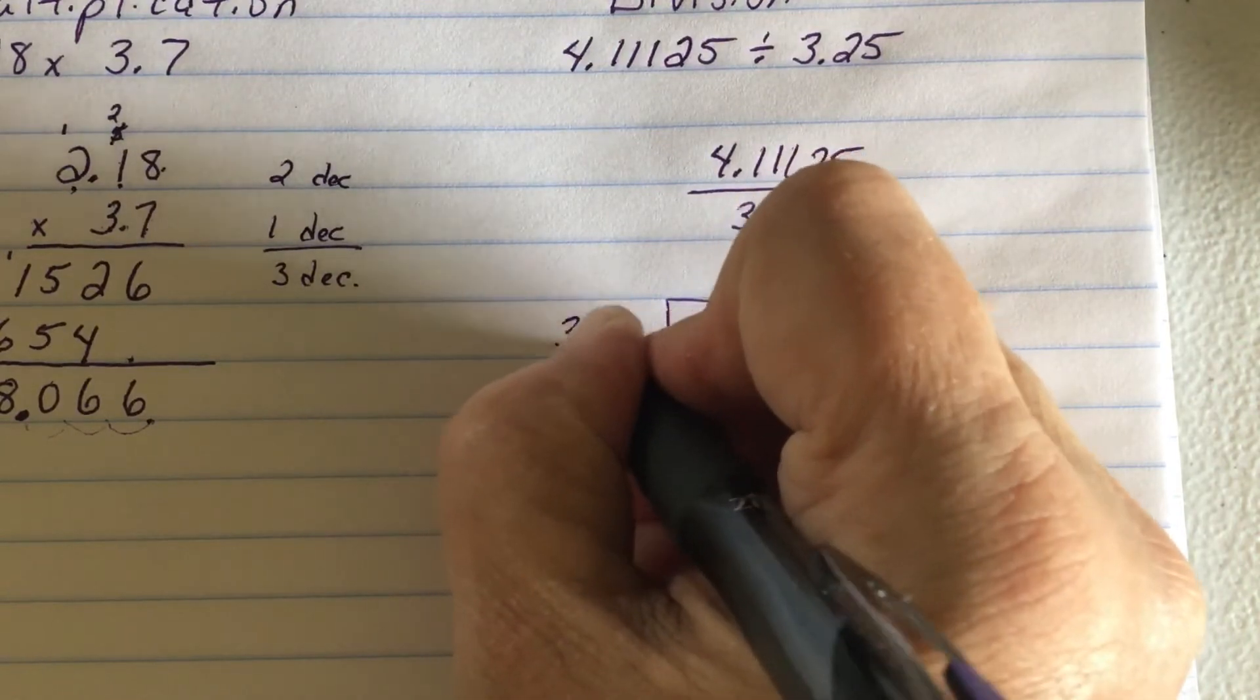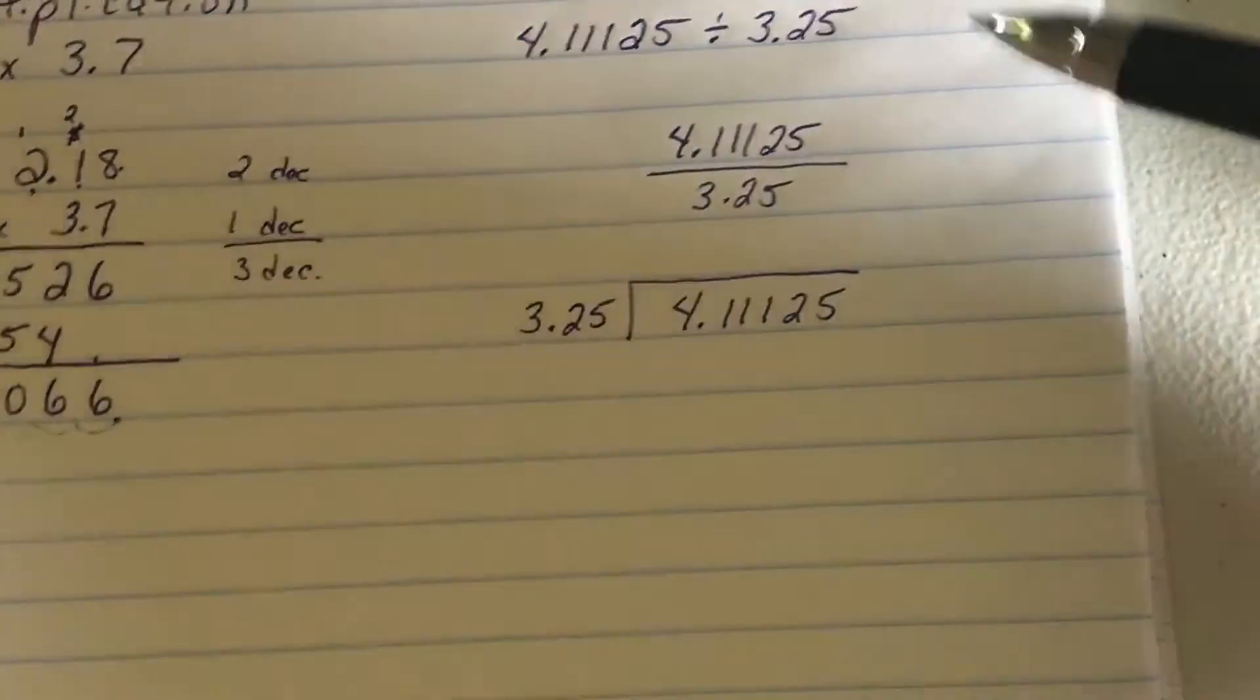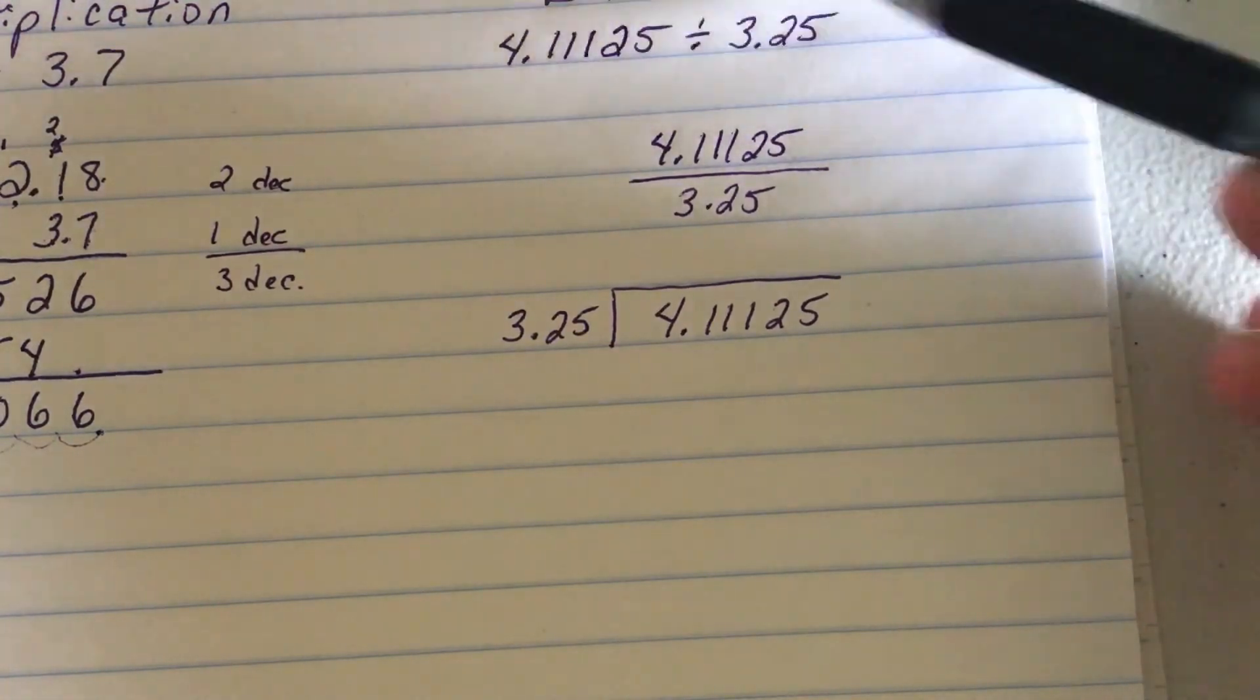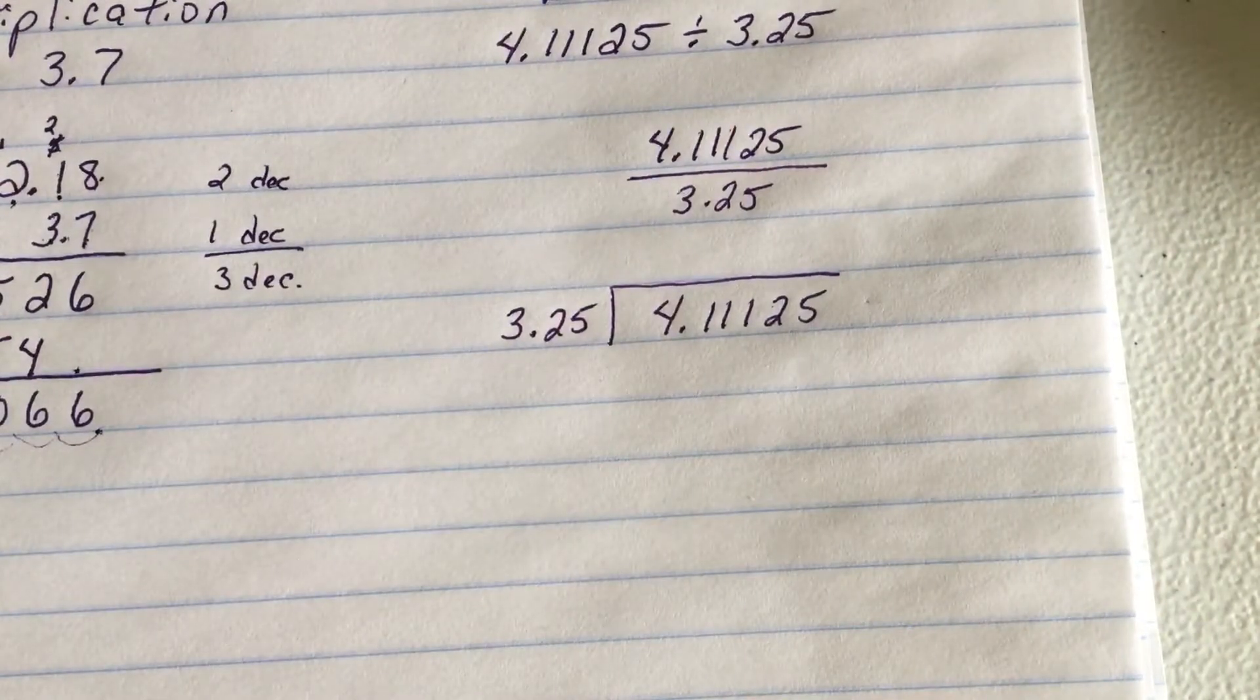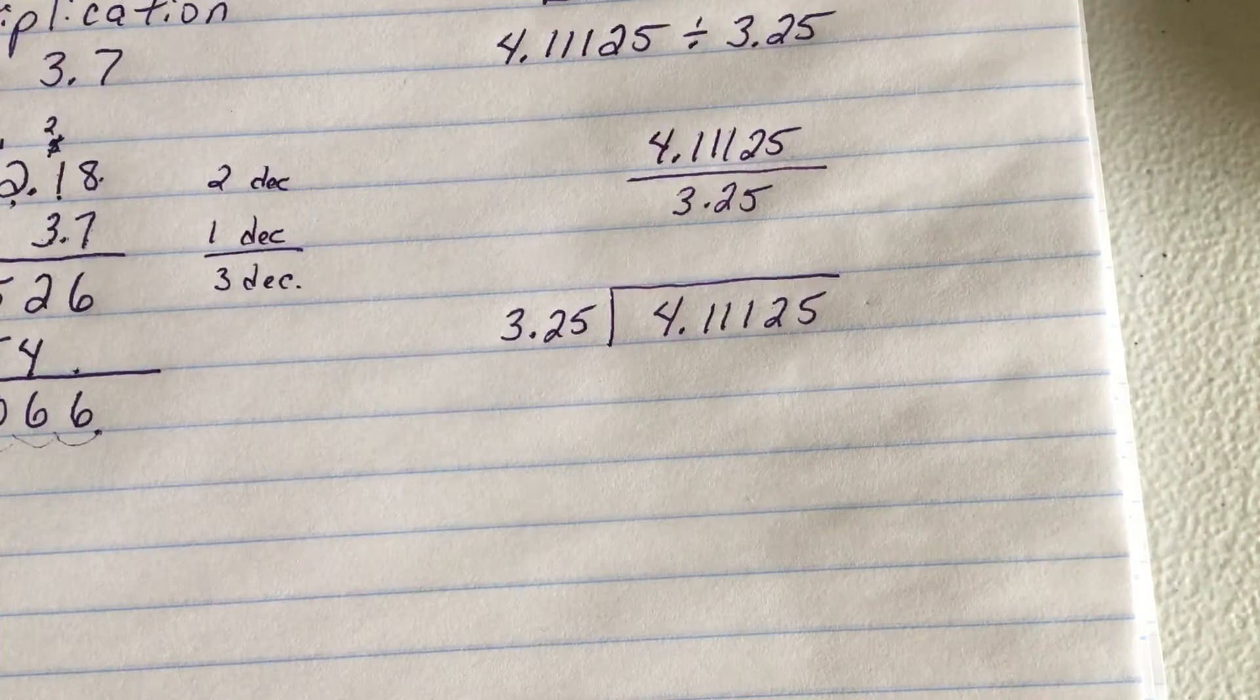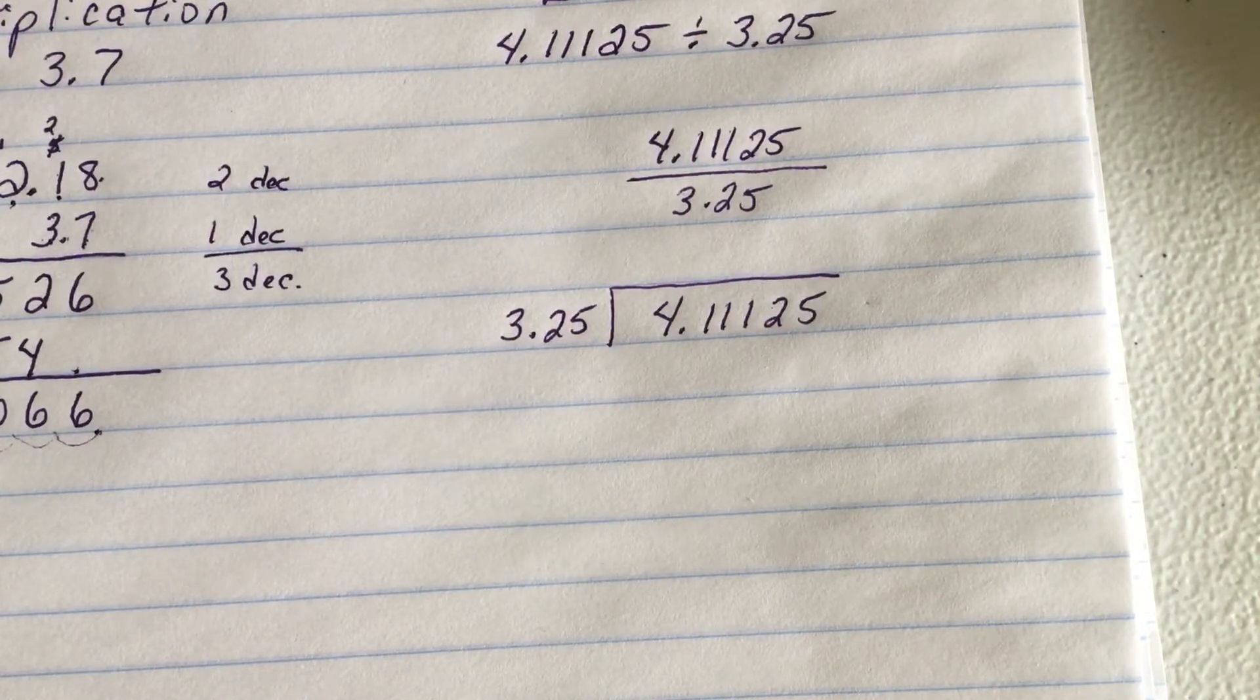Now, here's where mistakes that I see with students. Pitfalls. They'll get handed this problem and they go to rewrite this and they'll put the second number inside and the first number out. That is incorrect. First number goes in, second number goes out. The reason why a lot of students do that is because of how you key it into the calculator. So be careful. Now, calculators can divide by decimals. We can't.